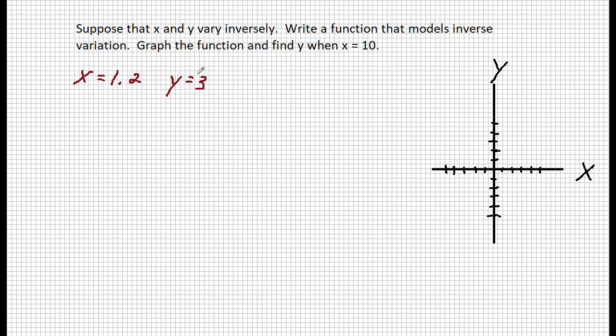Okay, we're told these vary inversely. So what does that mean? That means that we use our inverse variation. So y equals k over x.